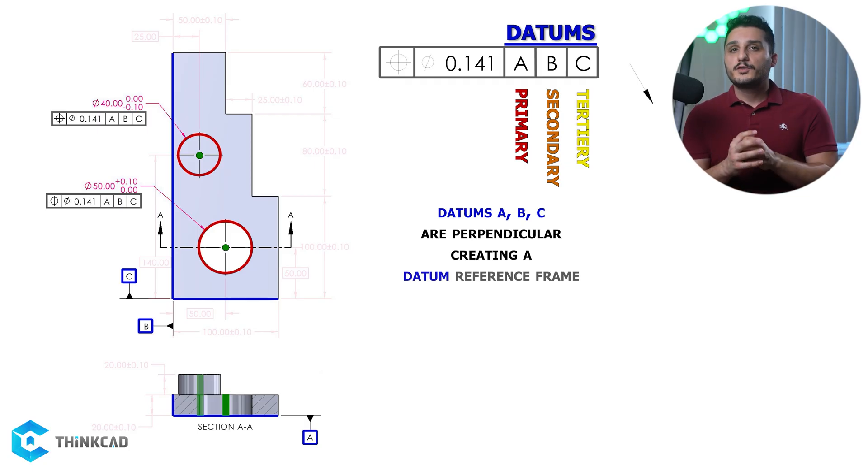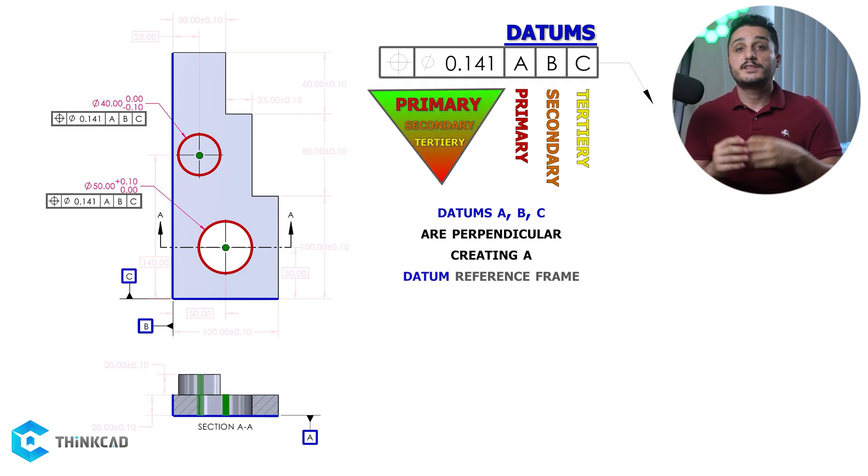Now always remember when you're reading your feature control frame, your primary datum has higher precedence than your secondary and tertiary datums. The secondary datum also has a higher precedence than your tertiary datum. A good rule of thumb is to specify them in the order that makes sense in your assembly.